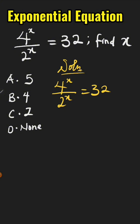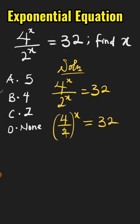We can express the left-hand side as 4 all over 2, all raised to the power of x, since we have the same exponent x in both numerator and denominator, which equals 32. Inside the bracket, 2 divides into 4 giving 2, so the expression becomes 2 raised to the power of x equals 32.